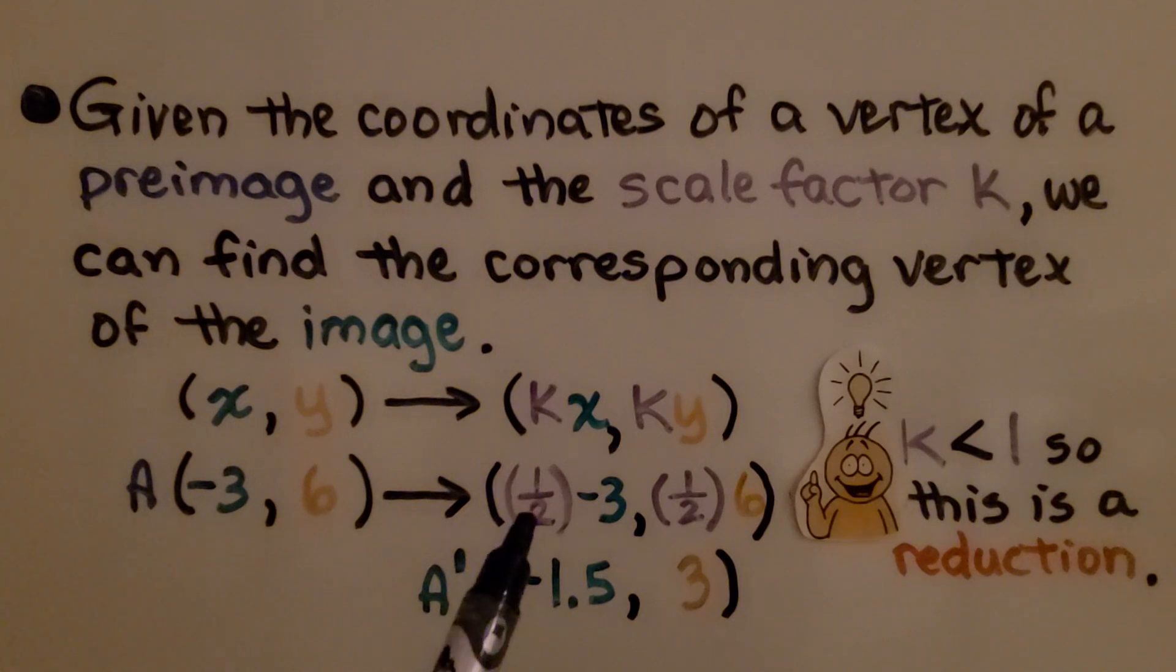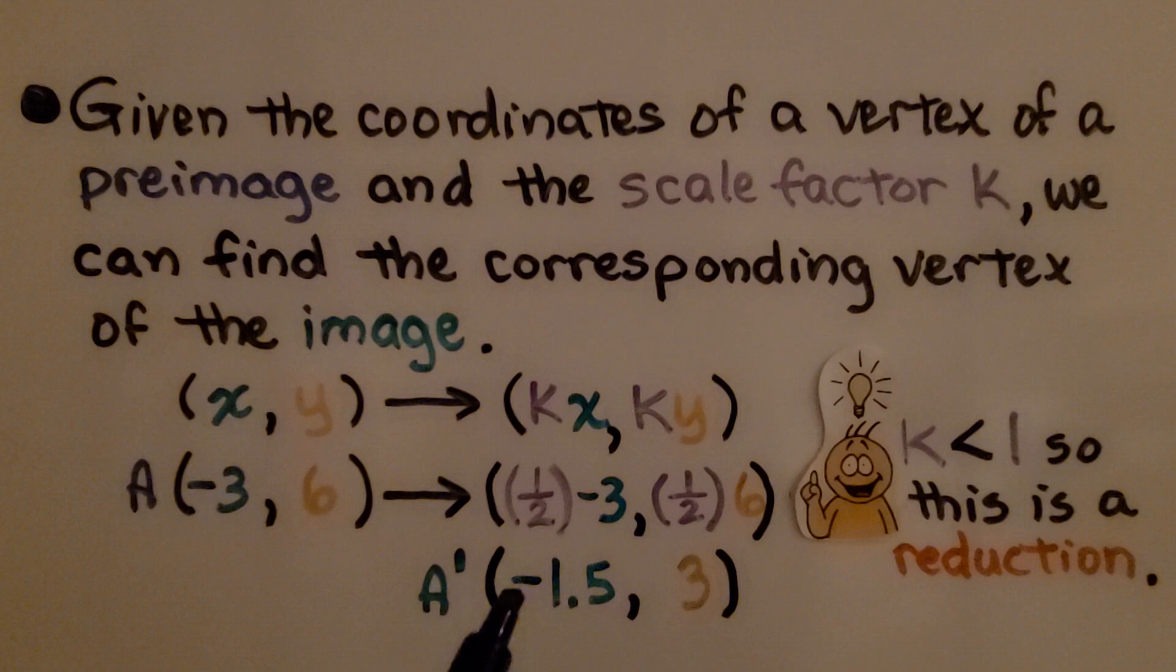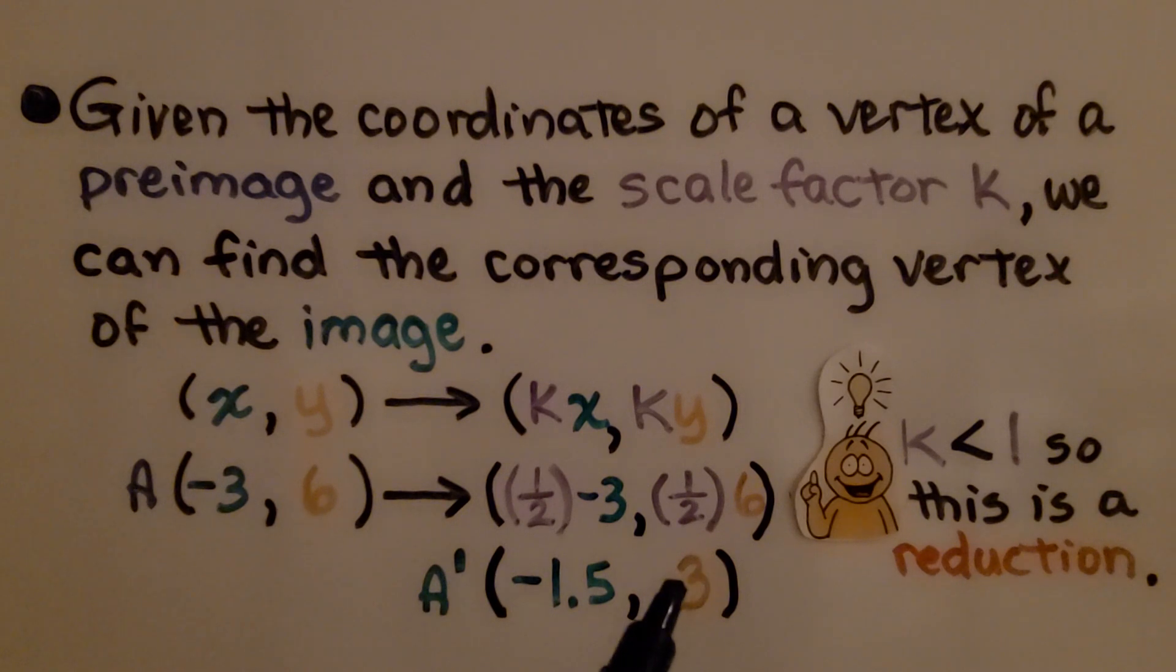It's telling us that the scale factor is 1/2. We're going to do 1/2 times negative 3 and 1/2 times 6. That means A prime will be negative 1.5 and y will be 3.